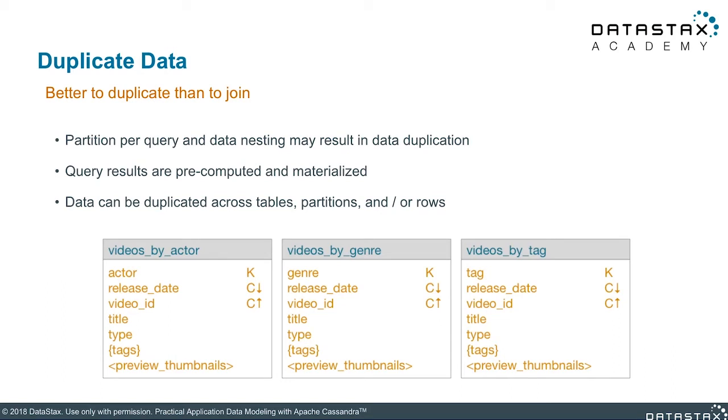We have three tables representing the videos object: videos by actor, videos by genre, and videos by tag. In a relational model you'd have a separate actors table, genres table, and tags table. But here we've joined videos with actors, videos by genre, and videos by tag on disk in tables materialized at write time. This obviously duplicates video data — every time we store a new video we have to write a record into each of these tables and keep those records in sync. DataStax Enterprise has tools to help with this. The important concept is that we're writing tables to satisfy queries so they can have constant time access.